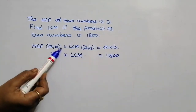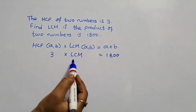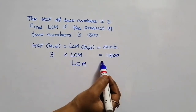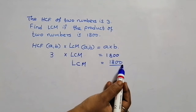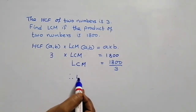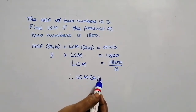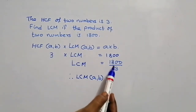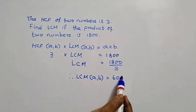Now transpose 3 towards the right hand side. Therefore, LCM is equal to 1,800 divided by 3. Therefore, LCM of two numbers A, B is — after division — 600.